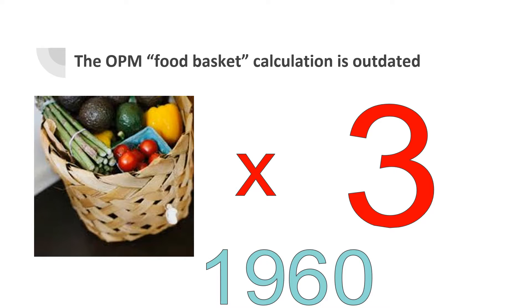When the first poverty line was developed in the 1960s, the average family spent about one-third of their income on food. The government had reasonably strong numbers for the minimum cost of food, so they defined the poverty line as three times a minimum food cost, or a food basket. Over time, food has gotten cheaper and is now a much smaller share of people's expenses — currently estimated to be only one-sixth of average family spending. However, the OPM poverty line is still set at three times the food cost, adjusted for inflation.